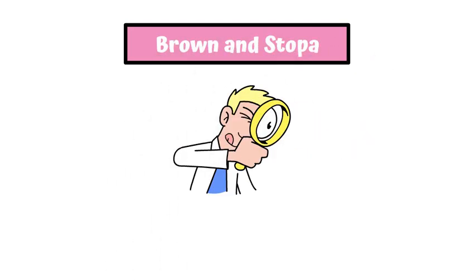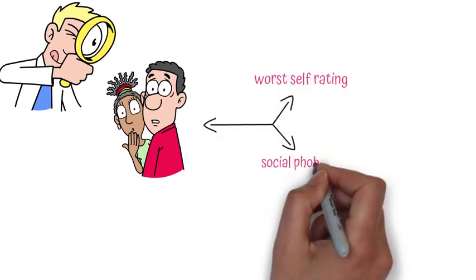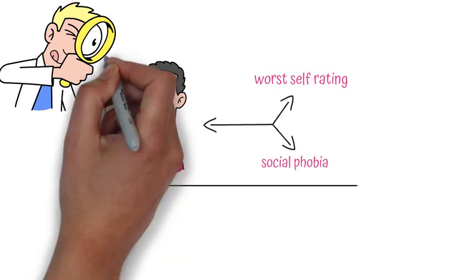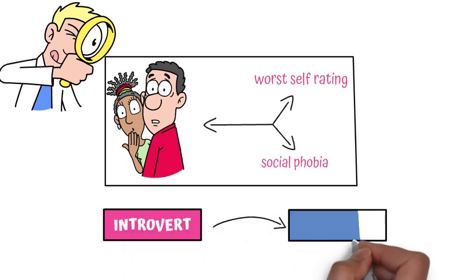Fast forward to 2007. Brown and Stopa linked it to social anxiety, finding heightened spotlight feelings during evaluative tasks predict worse self-ratings and phobic symptoms. These findings reveal it's not paranoia, it's a universal cognitive hiccup affecting everyone from introverts to extroverts.